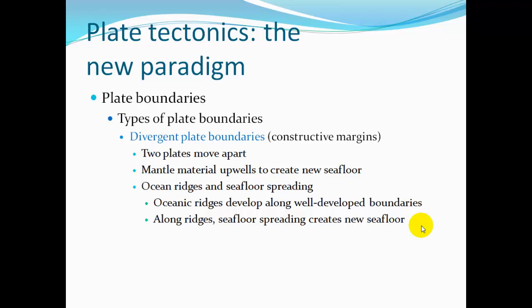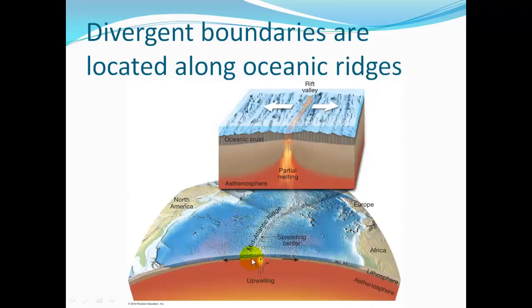Ocean ridges develop along well-defined boundaries where seafloor spreading creates new seafloor. Here's a diagram showing the mid-Atlantic ridge, where two plates under the ocean are pulling apart. Where they pull apart, there's a lowering of Earth's crust and less pressure on the material below. With less pressure, the melting temperature lowers, so part of the rock starts to melt, wells up, and forms new crust.